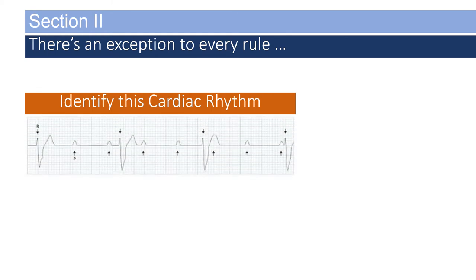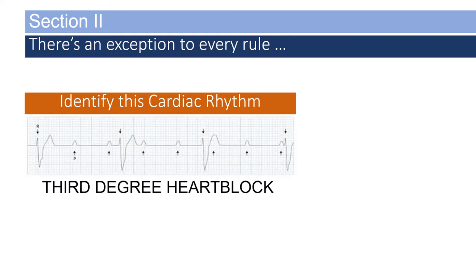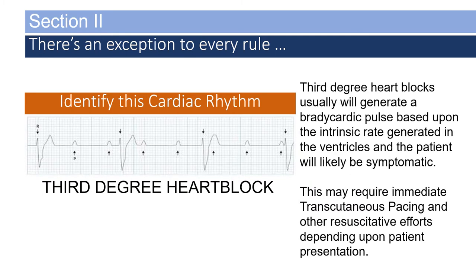Can you identify this cardiac rhythm? If you identified this as a third-degree heart block, you are correct. Third-degree heart blocks usually generate a bradycardic pulse because of the intrinsic rate firing at the ventricles at a rate of 20 to 40. The patient will usually be symptomatic due to the bradycardia, and this may require immediate transcutaneous pacing if the patient is unstable.